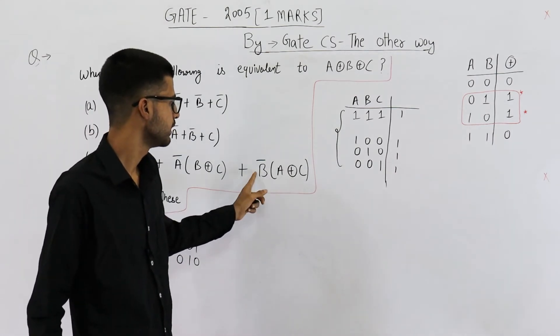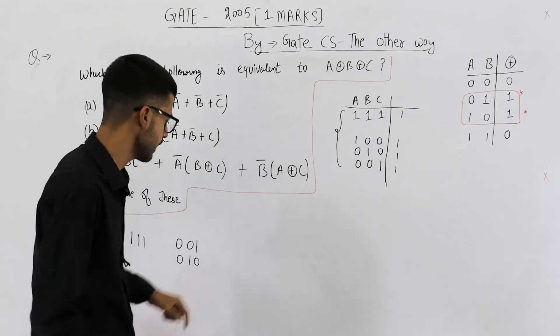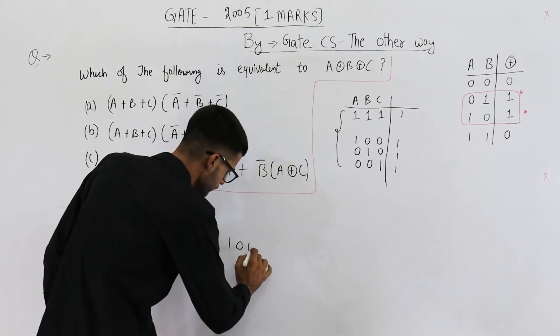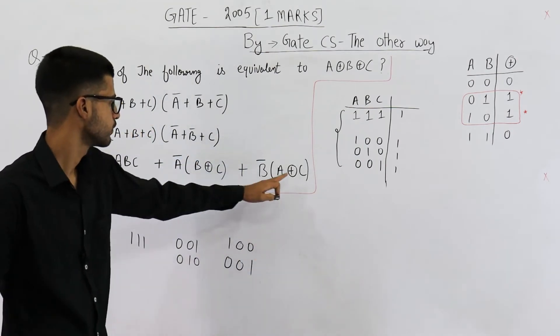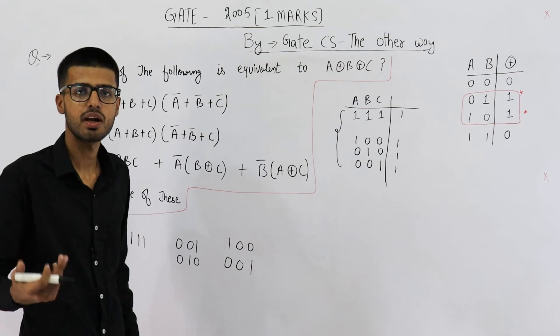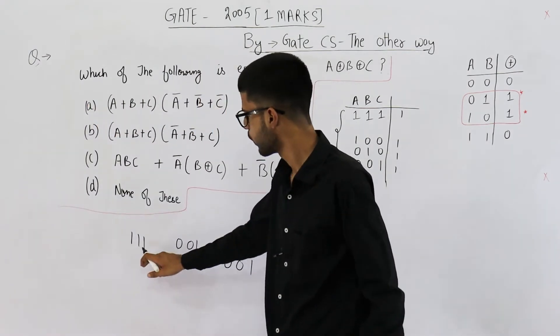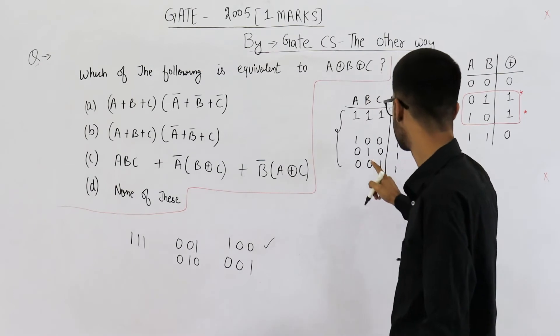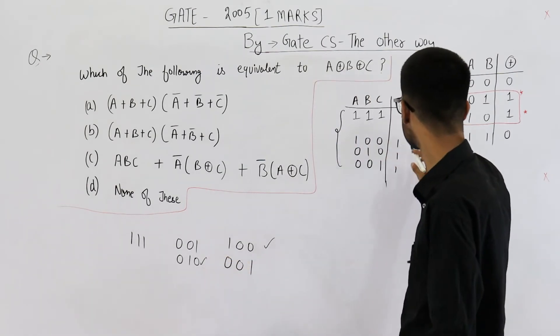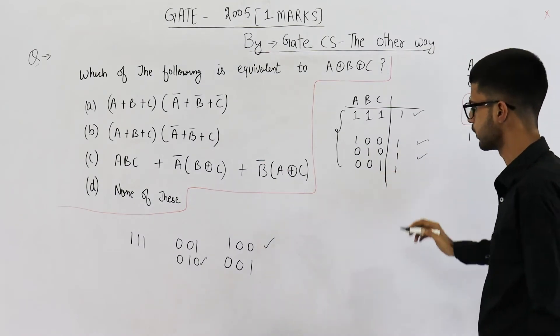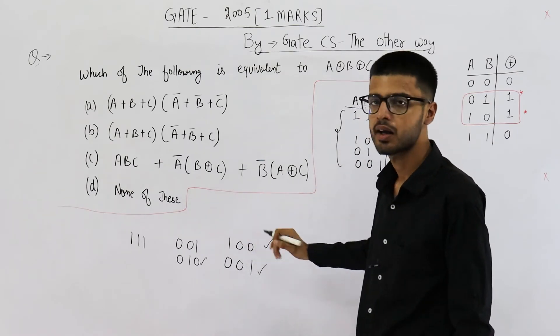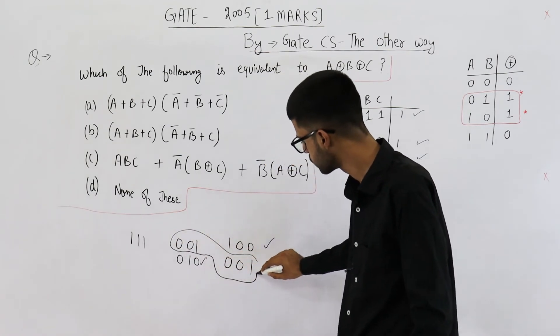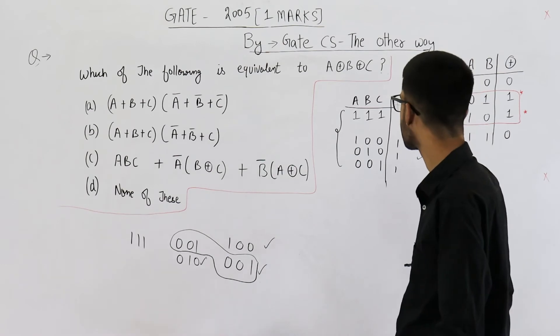And this one says B has to be 0. To make this entire term 1, B has to be 0. And any one of A and C can be high. So these are all the cases where expression C will output a 1. Now, if you see 1, 1, 1, we have it. Next one is 1, 0, 0. We have it. 0, 1, 0. We have it. And 0, 0, 1. We have it. So these two are exactly same. And we also have a repetition here. But that does not matter. Just count it once.